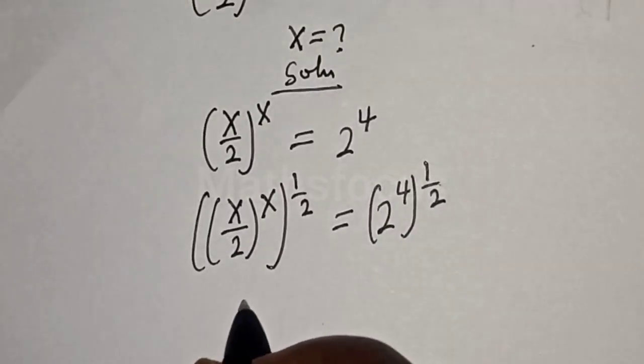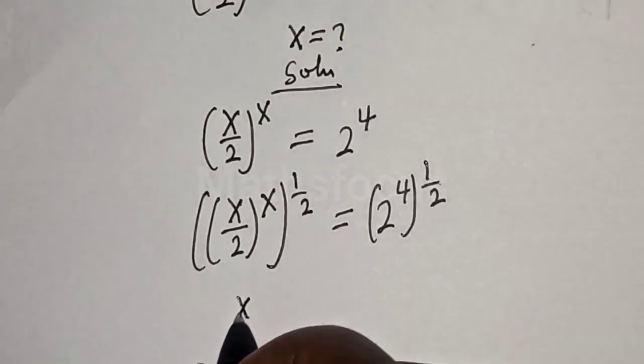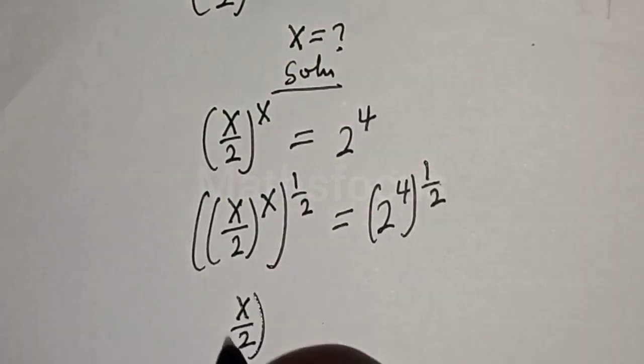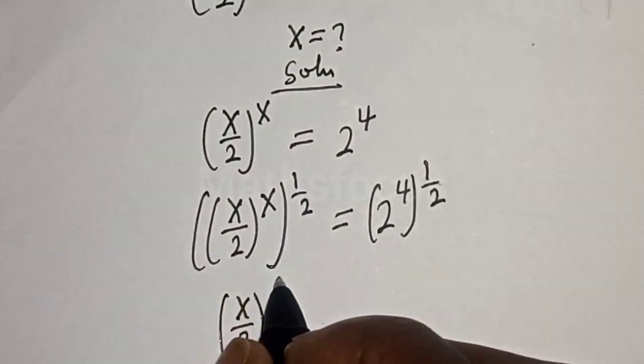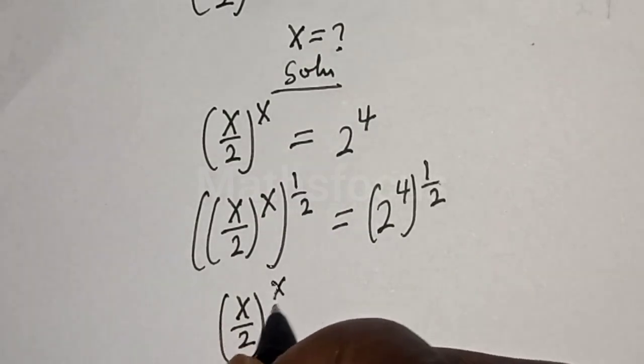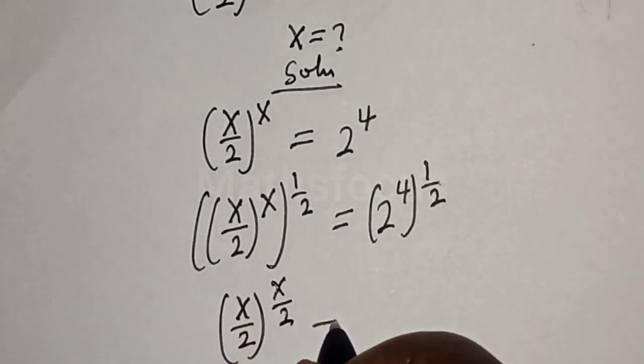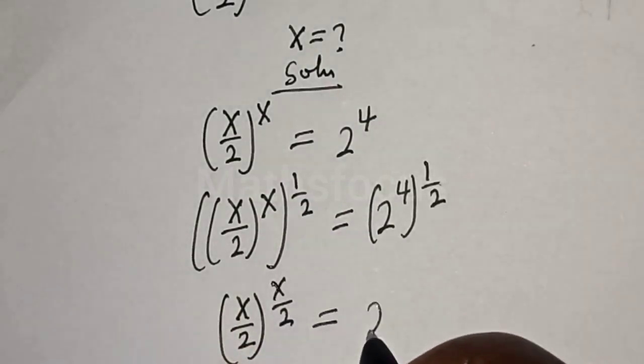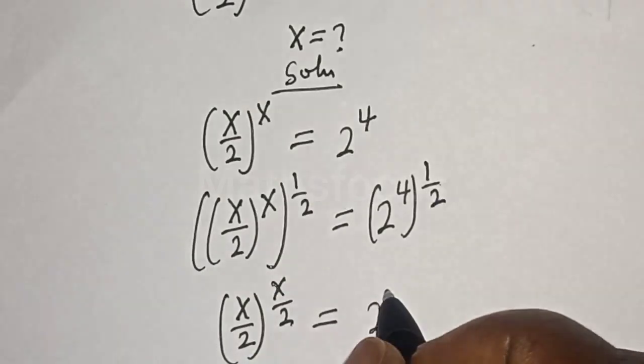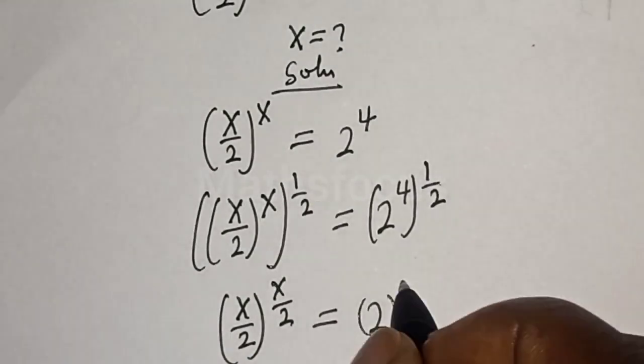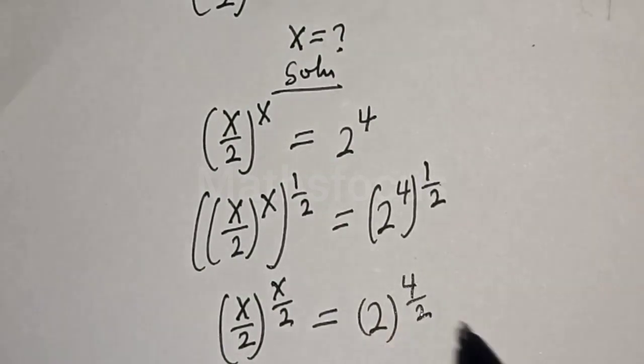Here, we have S over 2 to the power of S times 1 over 2. This is S over 2 is equal to 2 to the power of 4 times 1, that is 4 over 2.